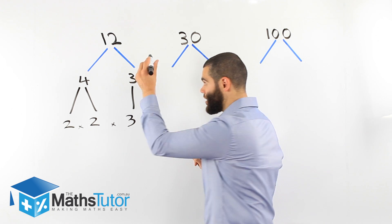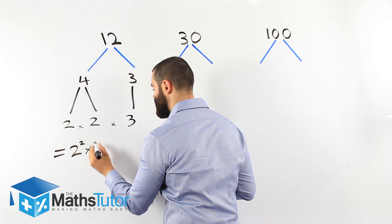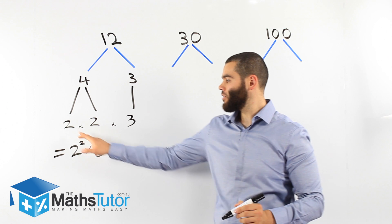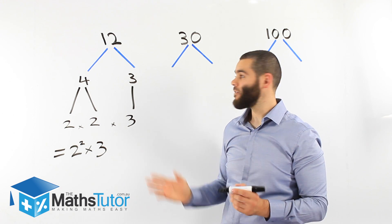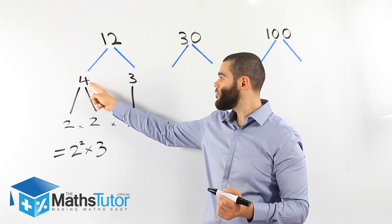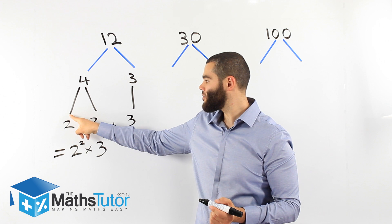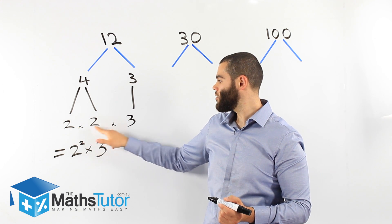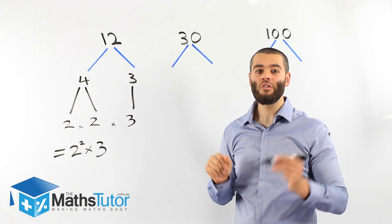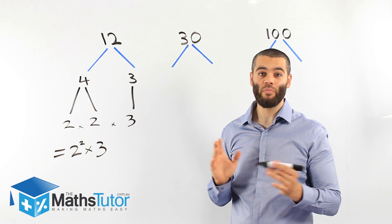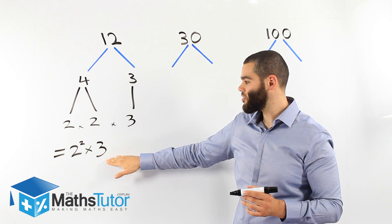We've now broken down our factor tree and found the prime numbers that give us twelve. Our answer is two squared times three — meaning two times two times three. These are the prime numbers that multiply to get twelve. We look for the factors of twelve: four and three. Three is prime and goes straight down; four is composite and breaks down to two times two. As a tip, if you need to know the difference between prime and composite numbers, you can look at one of our previous lessons.